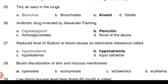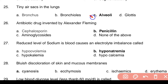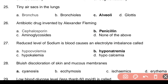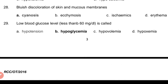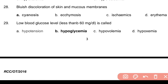Question 24: Surgical removal of entire lung is called — Answer: b. Pneumonectomy. Question 25: Tiny air sacs in the lungs — Answer: c. Alveoli. Question 26: Antibiotic drug invented by Alexander Fleming — Answer: b. Penicillin. Question 27: Reduced level of sodium in blood causes an electrolyte imbalance called — Answer: b. Hyponatremia.